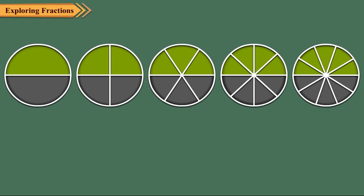Here, the circles have been divided into two, four, six, eight and ten equal parts. The shaded portion of these circles show half, two upon four, three upon six, four upon eight and five upon ten, respectively.